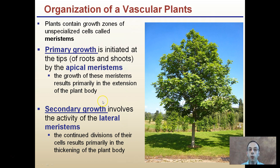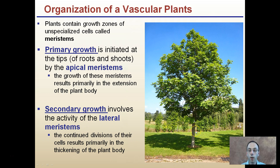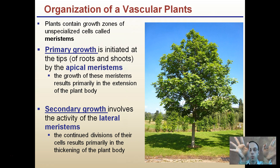In this image, primary growth would occur at the shoot tips shown here, and we also can't forget about the root tips, where all the primary growth would occur. Secondary growth, because we're looking at lateral growth, would be exemplified by the tree trunk — the trunk would be thickening, while our primary growth would be those actively growing and dividing tips.